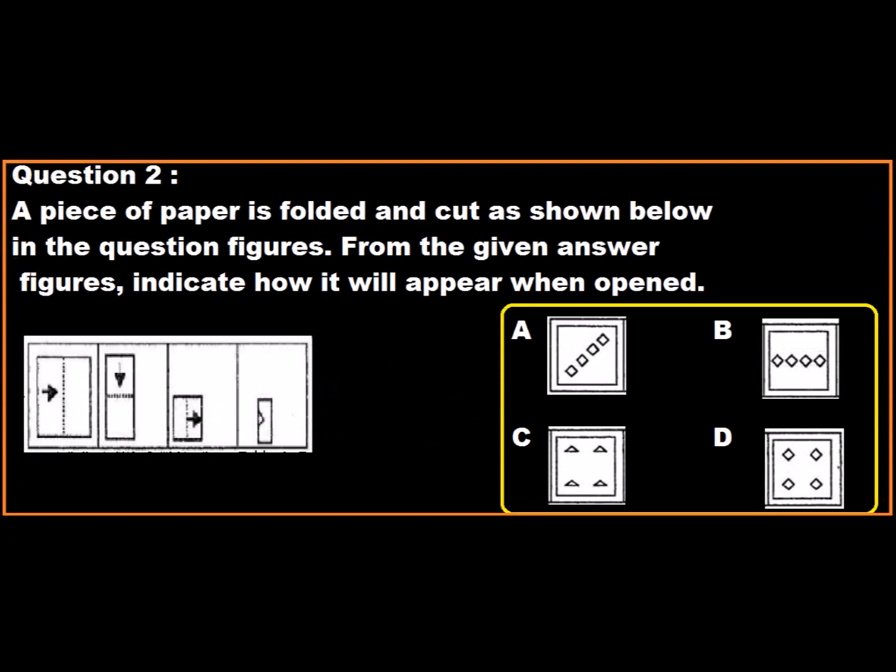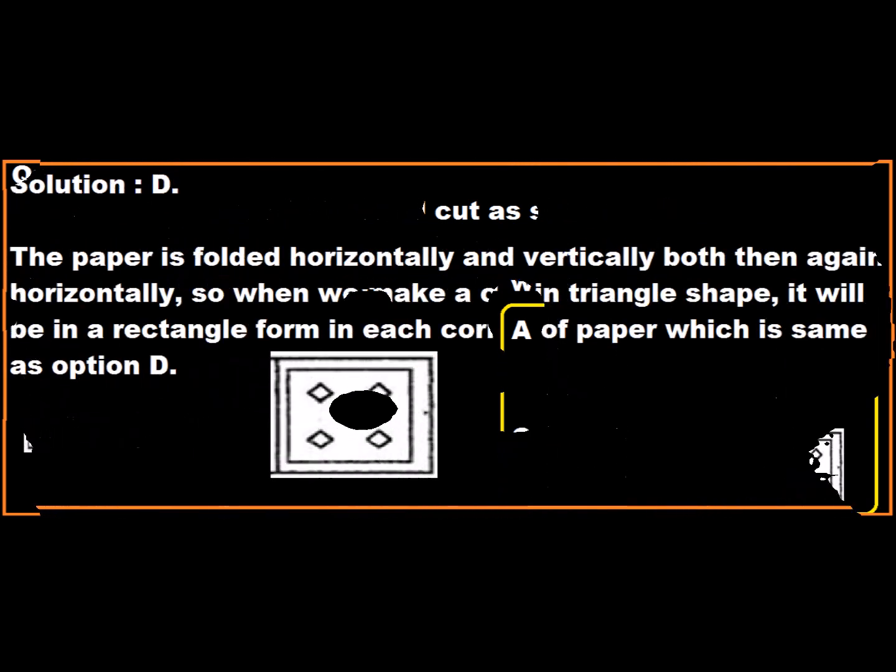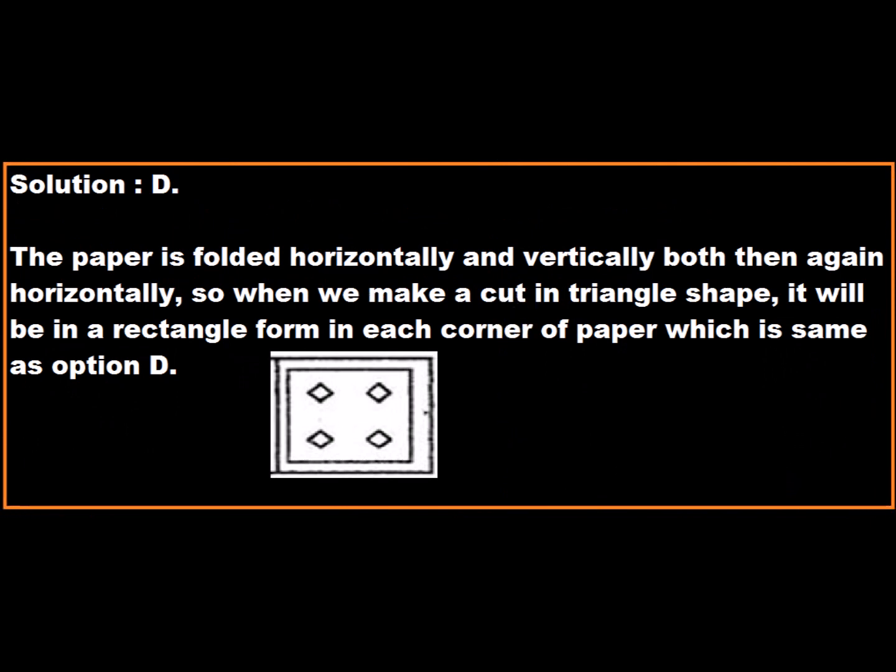Question 2: A piece of paper is folded and cut as shown below in the question figures. From the given answer figures, indicate how it will appear when opened. Option D is correct. The paper is folded horizontally and vertically both, then again horizontally. So when we make a cut in triangle shape, it will be in rectangle form in each corner of the paper, which is same as Option D. Hence, Option D is the correct response.